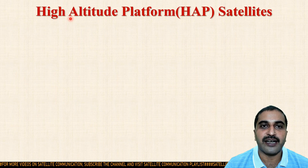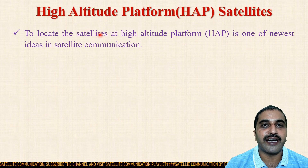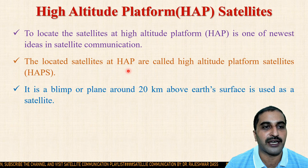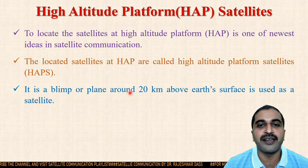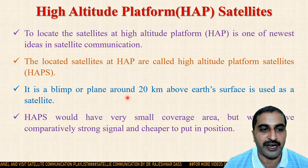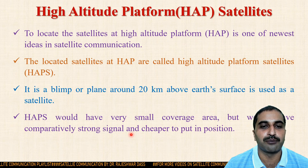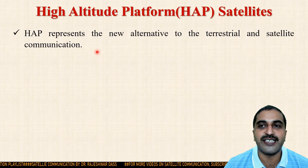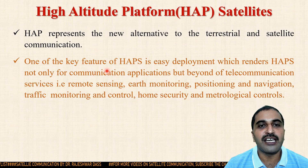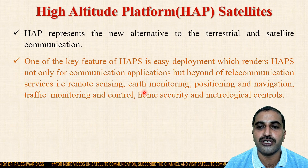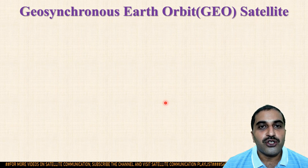Next are high altitude platform satellites, also known as HAPs. Locating the satellite at a high altitude platform is one of the newest ideas in satellite communication. It uses a blimp or plane around 20 km above the earth's surface as a satellite. HAPs would have very small coverage area but comparatively strong signal and are cheaper to put in position. HAPs represent a new alternative to terrestrial and satellite communication. Key features include easy deployment for communication applications and beyond, such as remote sensing, earth monitoring, positioning, navigation, traffic monitoring, home security, and meteorological controls.